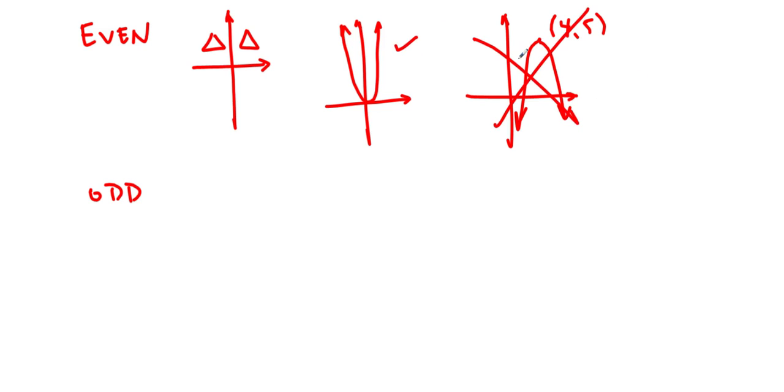This has even symmetry, but not this. One of the tests for symmetry is also algebraic. And so the rule is f of x should equal to f of negative x. And we'll look at that in a little bit.